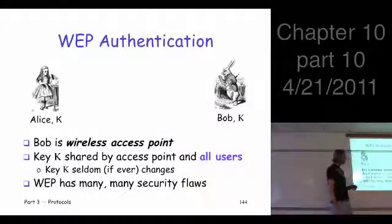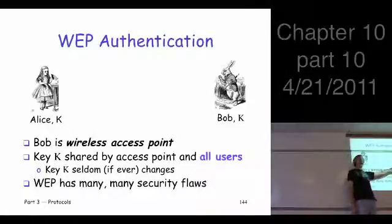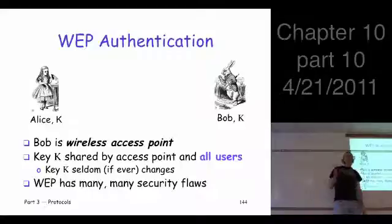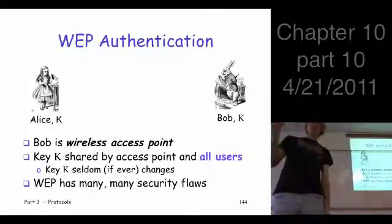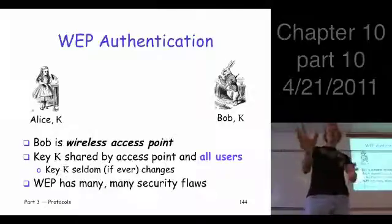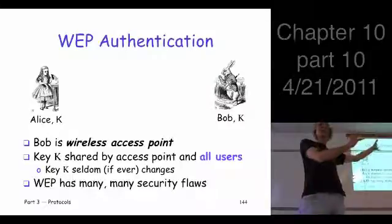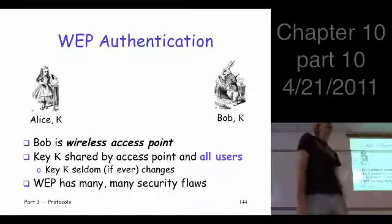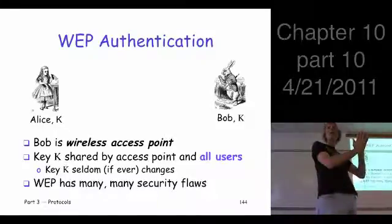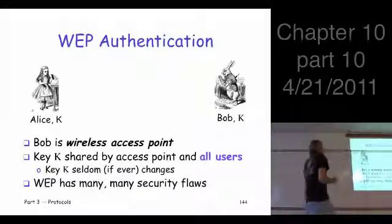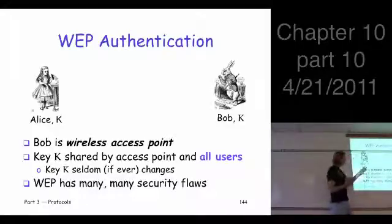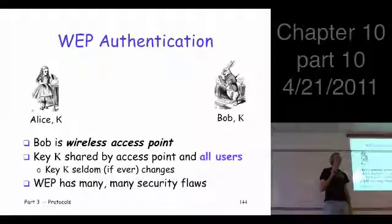So how does the authentication part go? Bob is not actually a server here — Bob is the wireless access point. The protection you get in WEP is only from the client to the wireless access point. Once it gets to the access point, whatever encryption and integrity and all that stuff is undone, and plain text data is sent out on the network. So we're just trying to protect the wireless part. There's Bob, the wireless access point, and here's a client. They share a symmetric key.